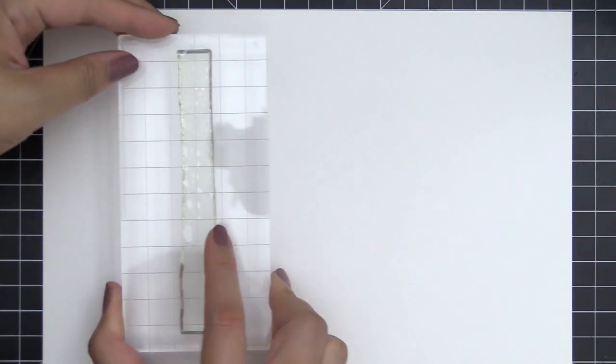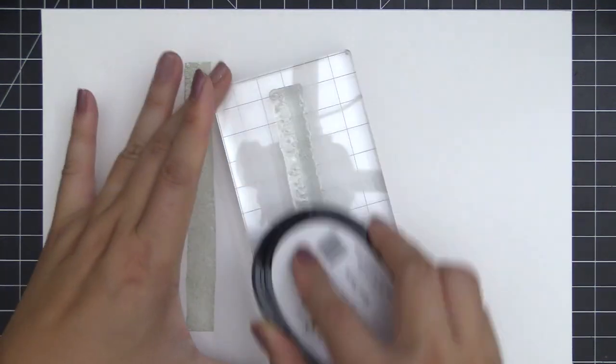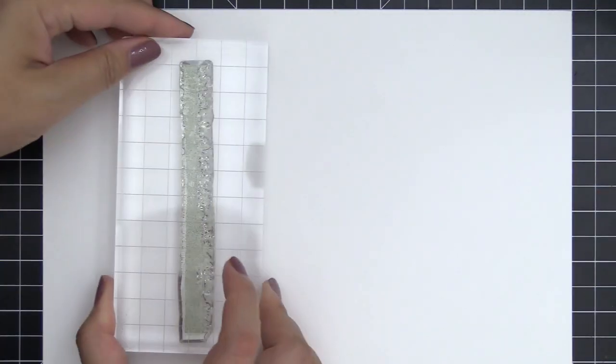This is Birch Impressionism Stamp Set from Altenew. This is a 6x8 stamp set with 14 individual stamps.